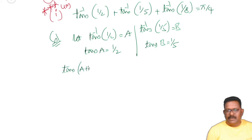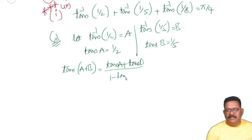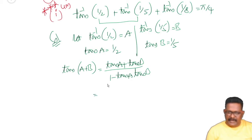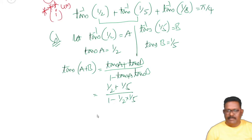Tan of a plus b is equal to tan a plus tan b divided by 1 minus tan a times tan b. So tan(a+b) equals 1 by 2 plus 1 by 5, divided by 1 minus 1 by 2 into 1 by 5.